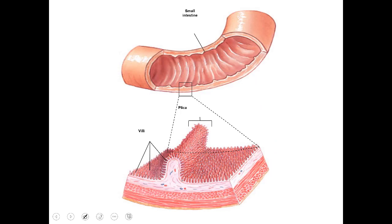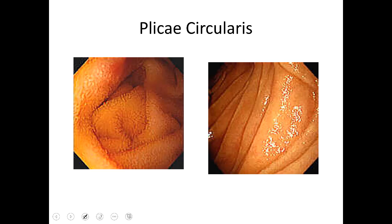This is a better schematic of the small intestine showing the plicae circularis. One of those folds is a plicae circularis, and each little projection sticking up is a villus. You can see there are a lot of them. The top image shows fold after fold, giving a huge amount of surface area. Here are examples of plicae circularis in the duodenum as well as in the jejunum.